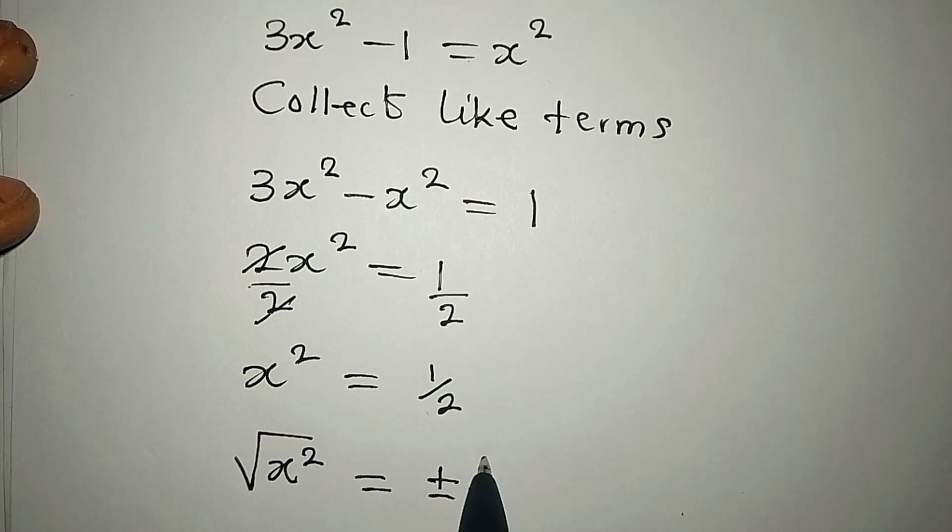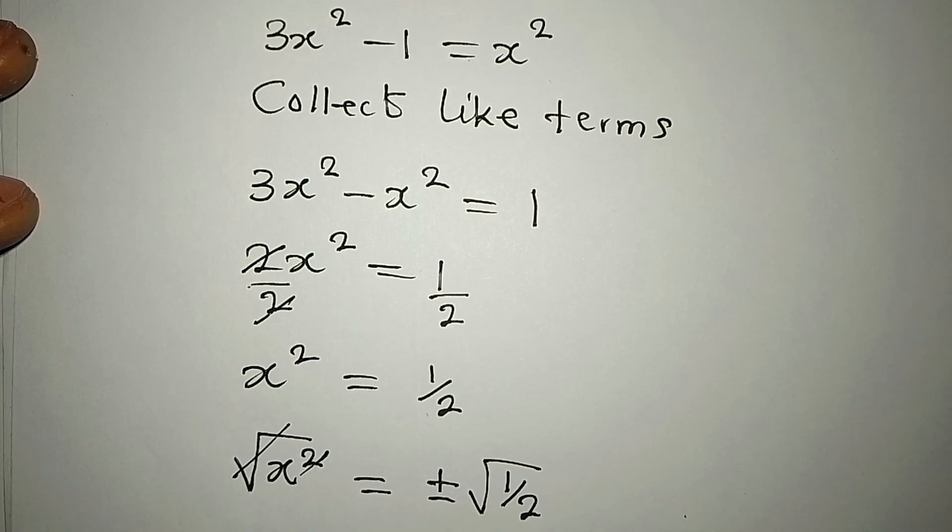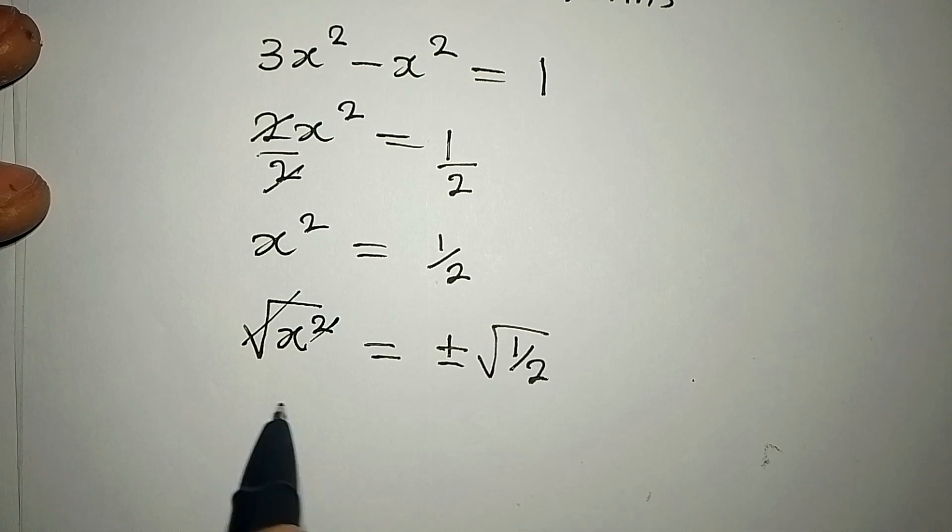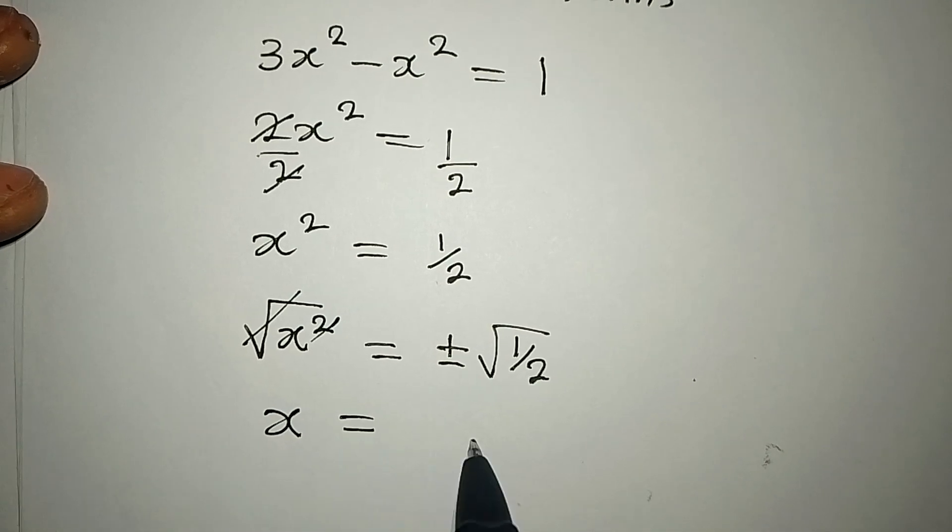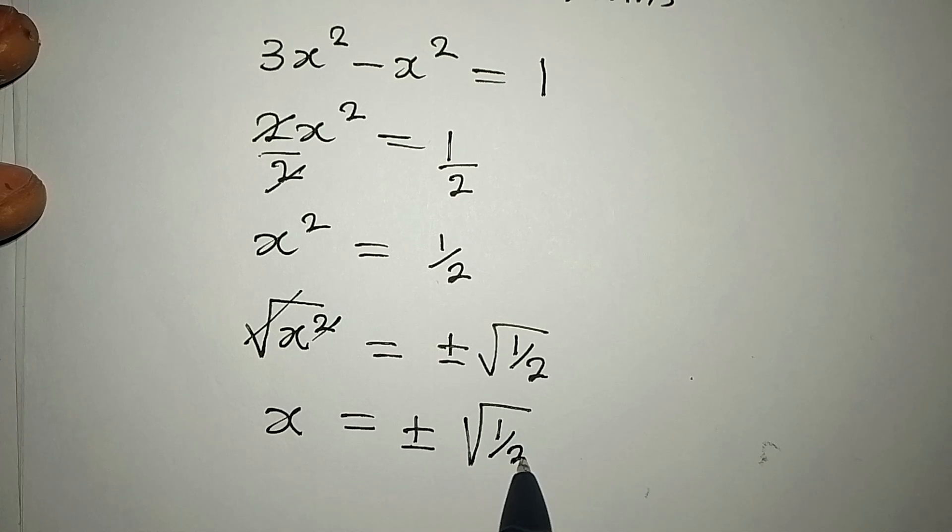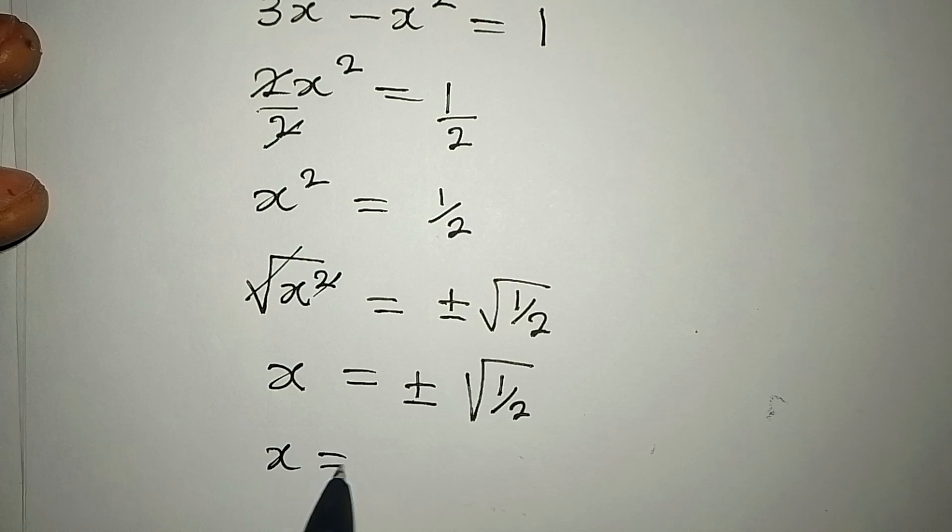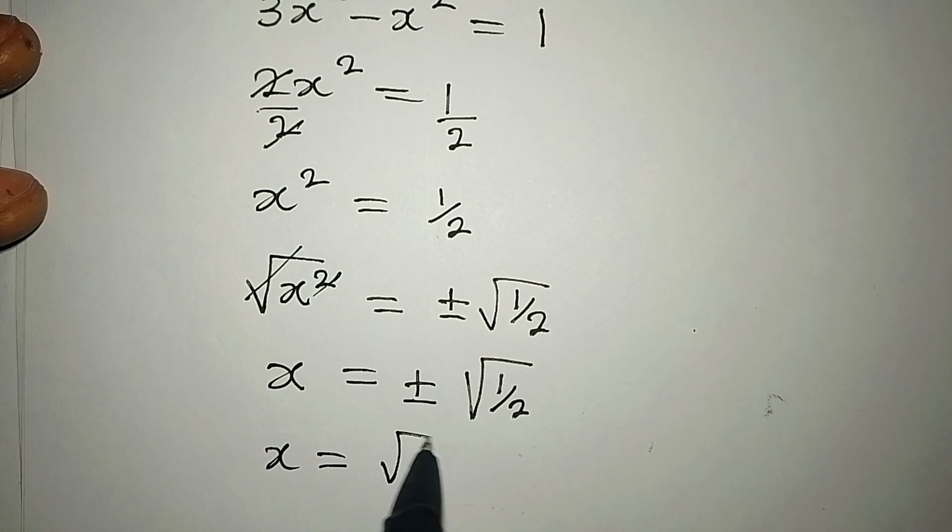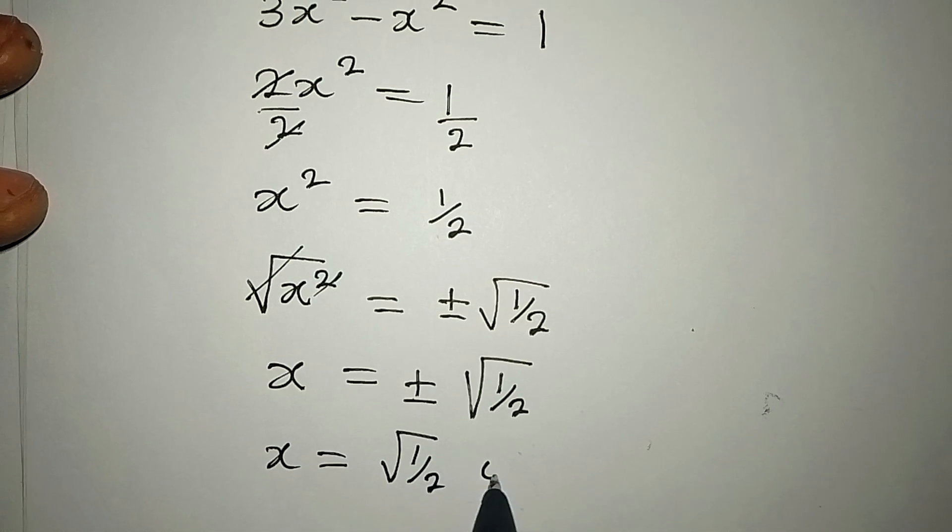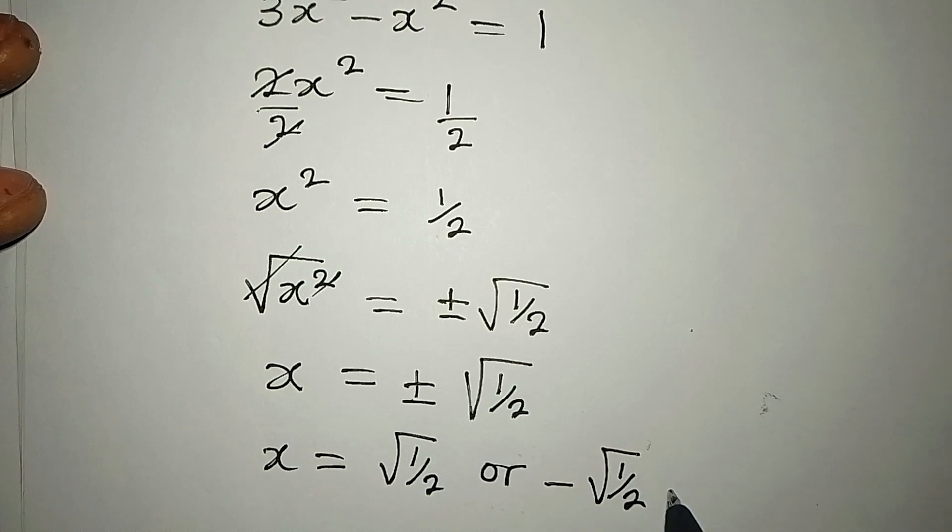This and this will cancel each other, so x = ±√(1/2). And what does this mean? It means that x is either equal to √(1/2) or -√(1/2).